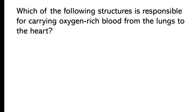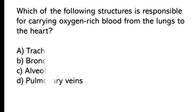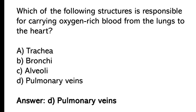Which of the following structures is responsible for carrying oxygen-rich blood from the lungs to the heart? Trachea, bronchi, alveoli, pulmonary veins. So the correct answer is option D, pulmonary veins.